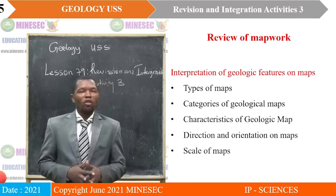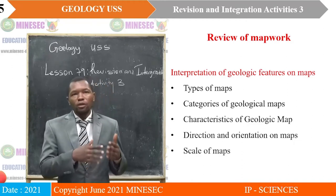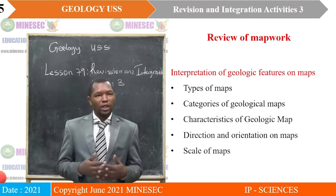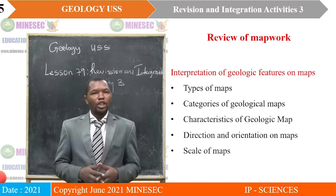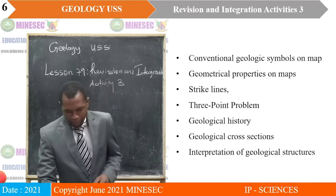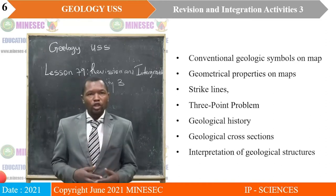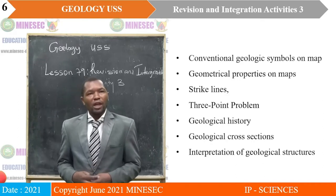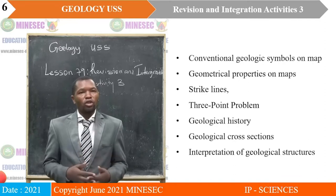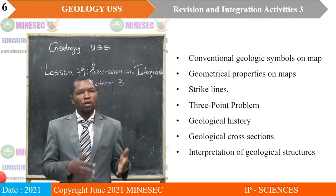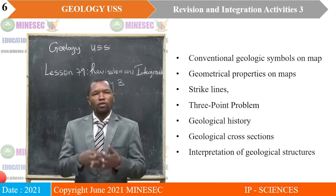Now we look at the review of map work. Under map work, we saw interpretation of geological features on maps, where we saw the different types of maps, categories of geological maps, characteristics of geologic maps, direction and orientation on maps, scales of maps, conventional geological symbols on maps, geometrical properties of strata on maps, strike lines, three-point problems, geological history, a chain of lessons on geological cross-sections, and interpretation of geological structures.